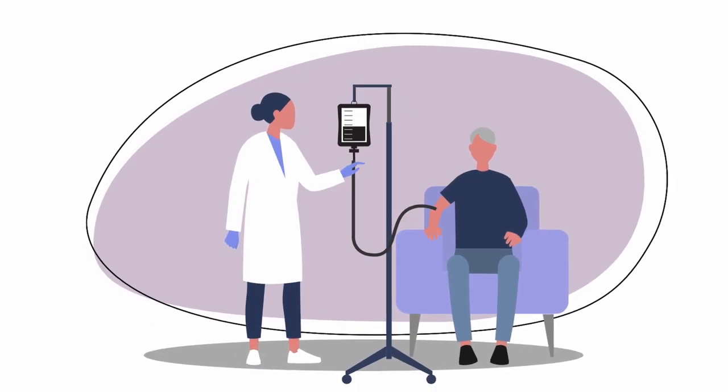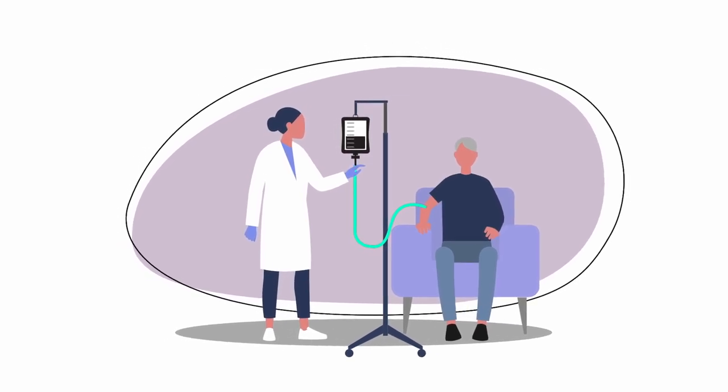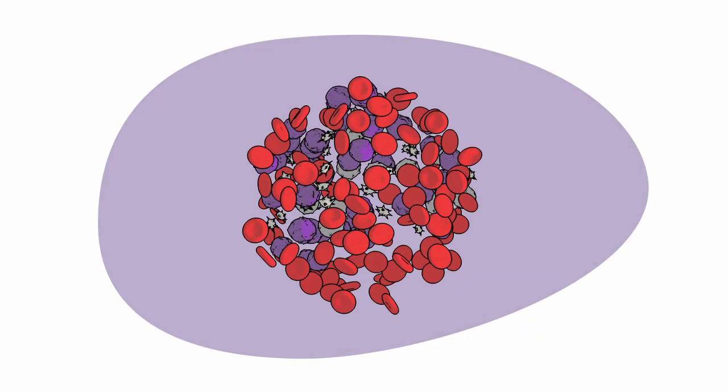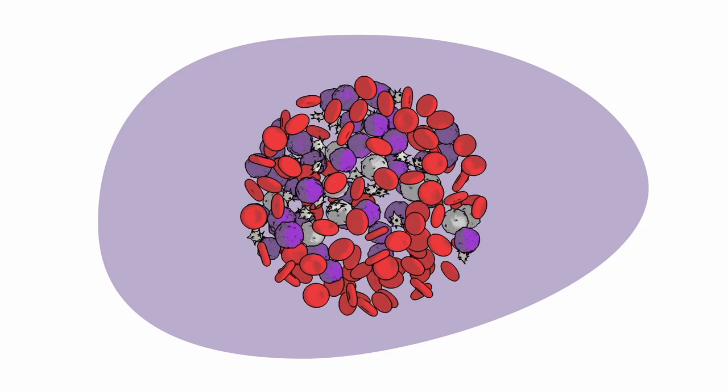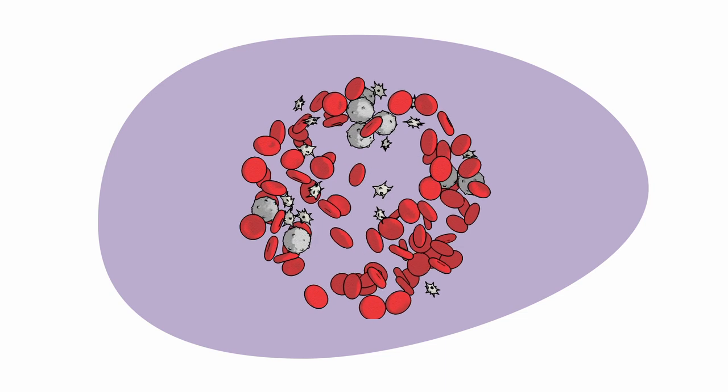The standard treatment for PTCL is chemotherapy. Chemotherapy uses powerful drugs to destroy fast-growing cancer cells. These drugs can also damage other fast-growing cells that are normal.